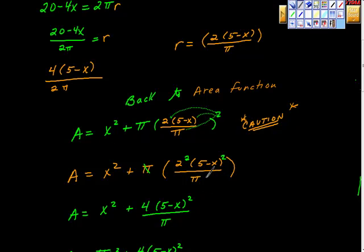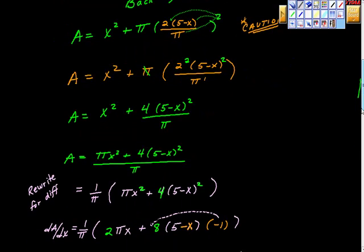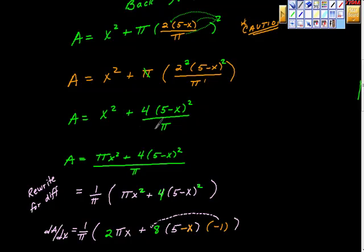After distributing the exponent, a π from the numerator cancels with one π from π² in the denominator, leaving one π remaining. Two squared is four, and (5 - x)² stays as is. So we have area = x² + (5 - x)²/π. Then I converted x² to πx²/π so both terms share a common denominator of π, allowing us to gather them under one fraction.